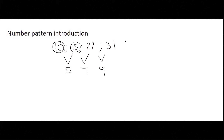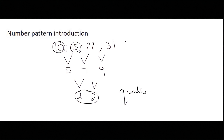If those three numbers we found were the same, that would be called a linear number pattern. However, since those three numbers are not the same, we proceed to the next row and do the same again: 7 minus 5 gives us 2, and 9 minus 7 is 2. When the second row becomes constant, we call that a quadratic number pattern.